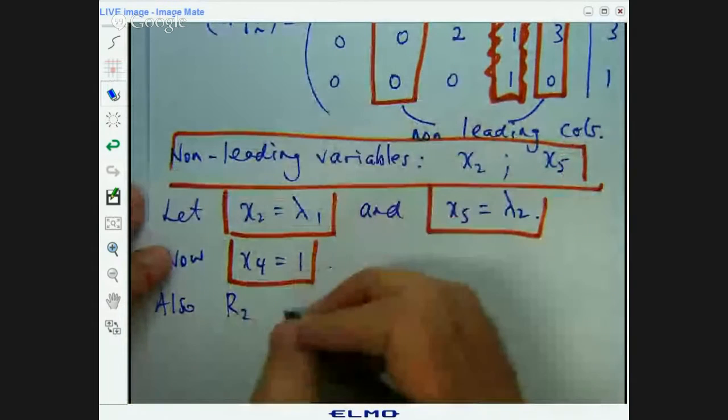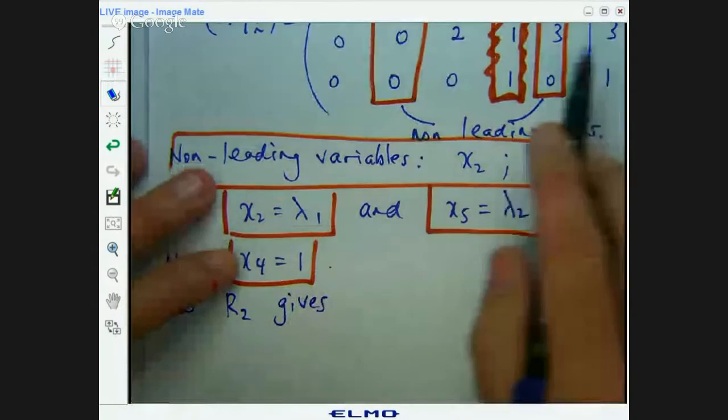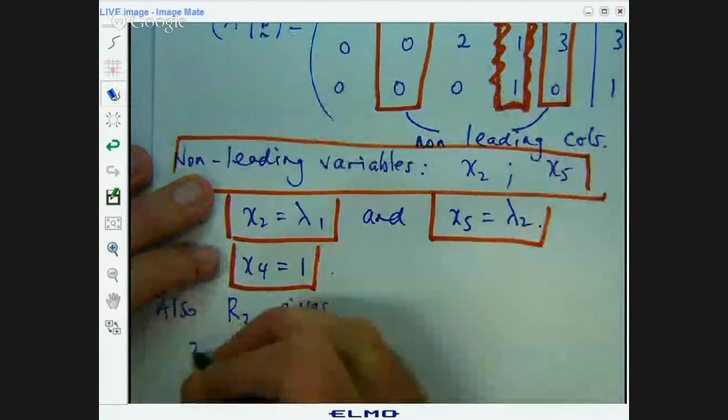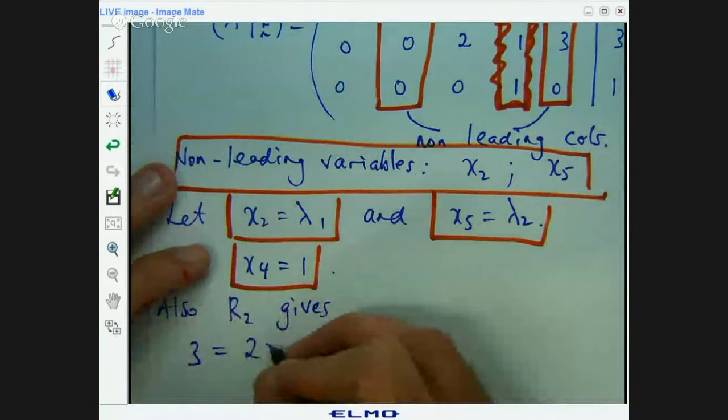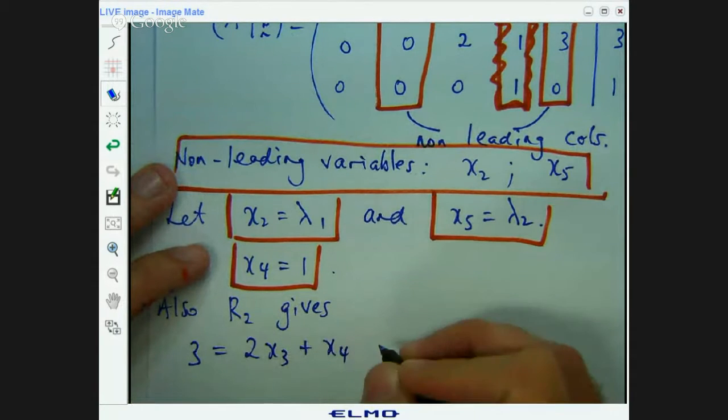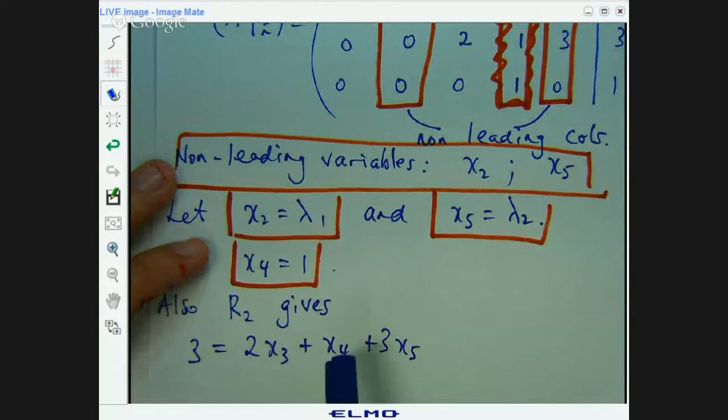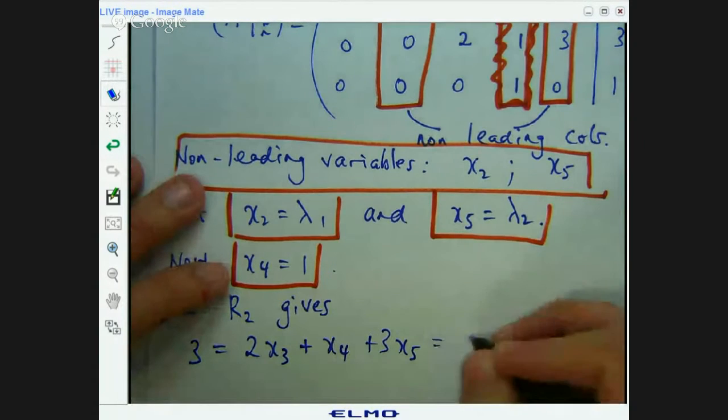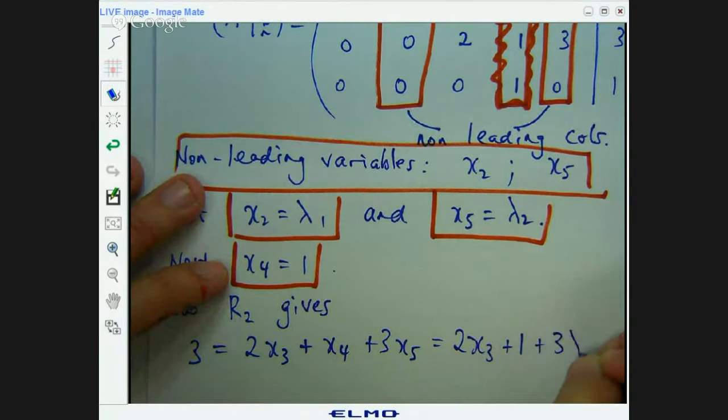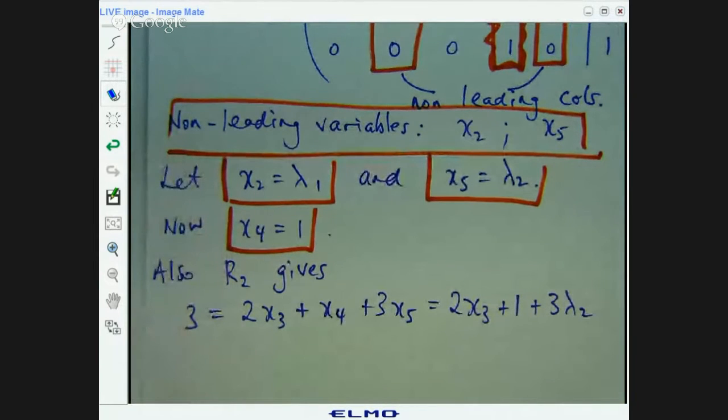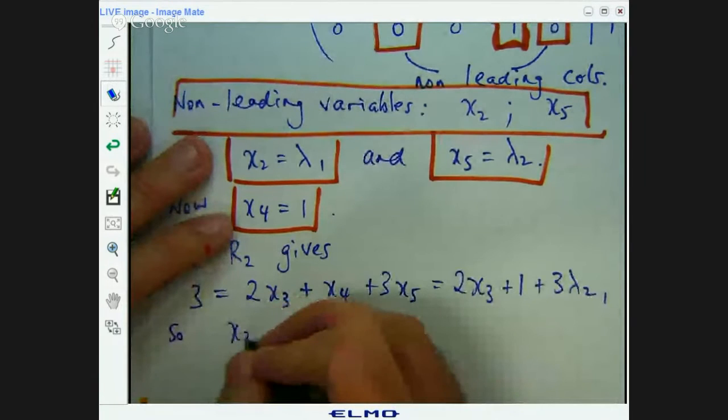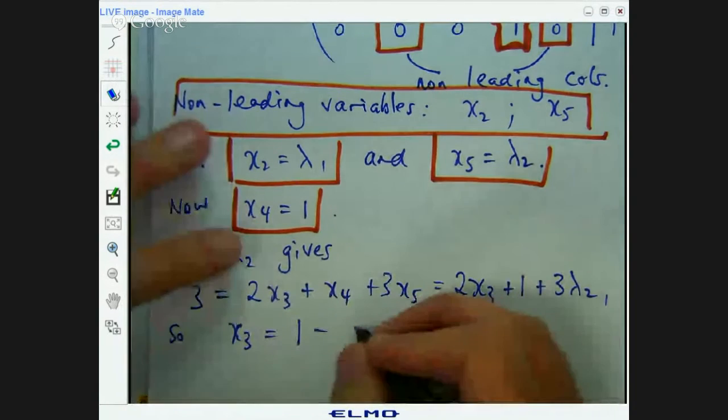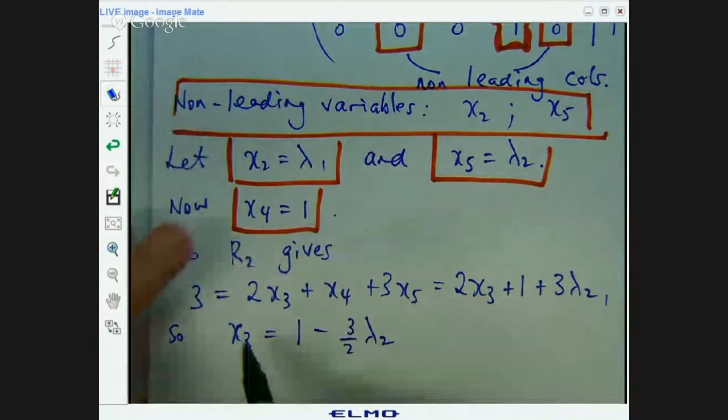So let's do that. So row 2 gives, so what do we have here? So I'll just write it around the other way. We've got 2x3 plus 1x4 plus 3x5 equals 3. So we can now replace x4 with 1, x5 with lambda 2 and I can rearrange to make x3 the subject. So I rearrange, I make x3 the subject and get x3 in terms of lambda 2. If I do that, I'll get the following. So that will come to the other side, that will come to the other side and you divide by 2. So now I have x3 in terms of lambda 2.